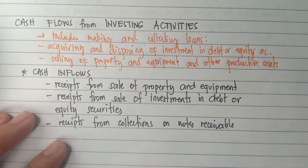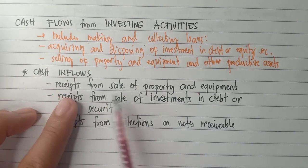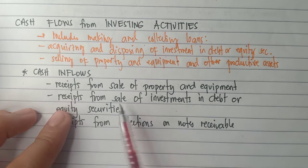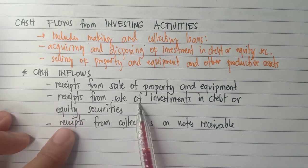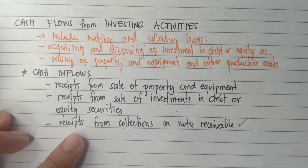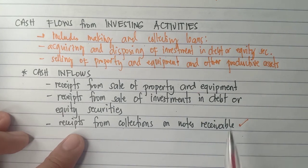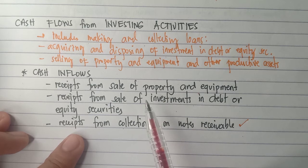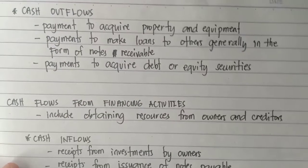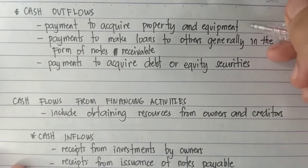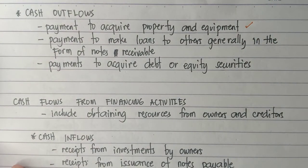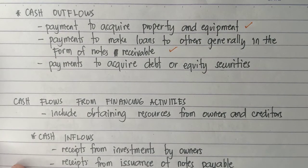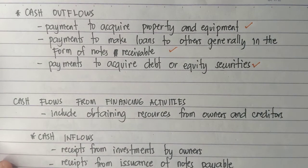For the cash inflows under investing activities, we have receipts from sale of property and equipment, receipts from sale of investments in debt or equity securities, and receipts from collections on notes receivable. For cash outflows under investing, we have payment to acquire property and equipment, payments to make loans to others generally in the form of notes receivable, and payments to acquire debt or equity securities.